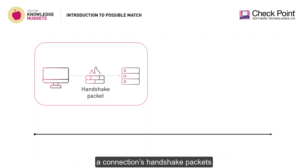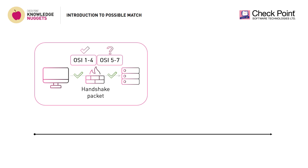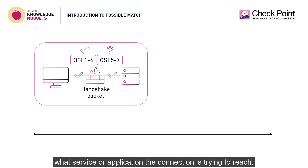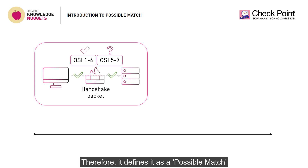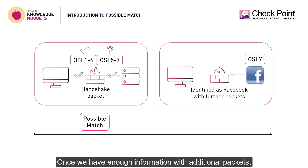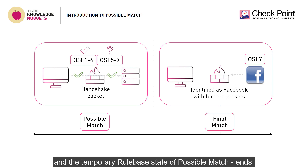As we know, a connection's handshake packets do not contain any information on higher OSI layers. This means that when a connection is initiated, the gateway still does not know what service or application the connection is trying to reach. Therefore, it defines it as a possible match until further packets arrive. Once we have enough information with additional packets, the final rule base match can be achieved, and the temporary rule base state of possible match ends.